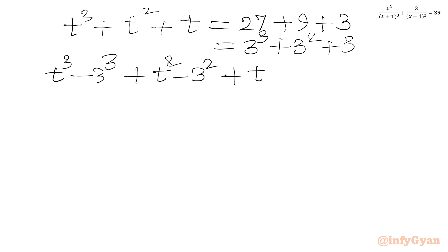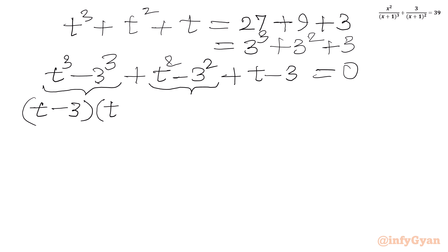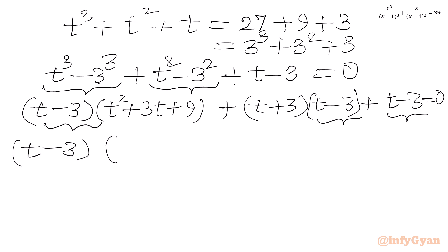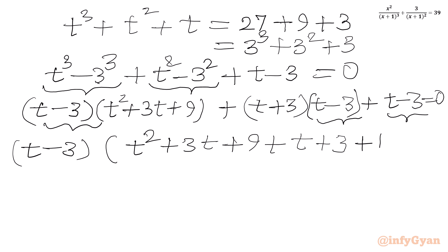Now I will take all the terms to one side: t³ − 3³ + t² − 3² + t − 3 = 0. We apply the difference of cubes formula to the first pair. So we get (t − 3)(t² + 3t + 9), plus (t + 3)(t − 3), plus (t − 3) = 0.